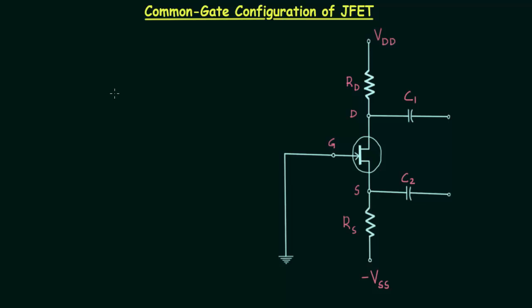In the last lecture we completed voltage divider biasing and the next biasing scheme is common gate configuration. In this presentation we will find out the operating point of the common gate configuration of JFET.